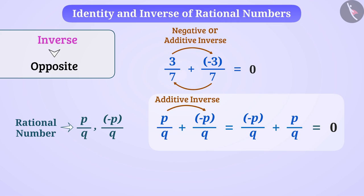Similarly, rational number p by q is additive inverse of minus p by q. Negative or additive inverse of a rational number is obtained by multiplying minus 1, means changing the sign of rational number.